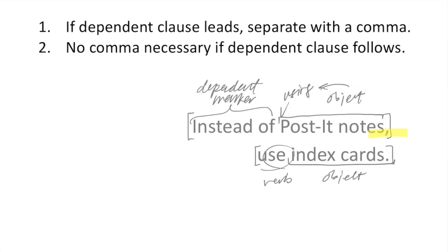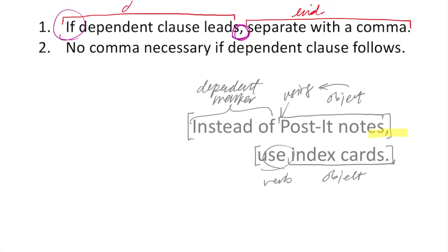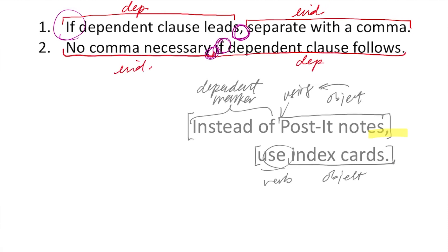This leads us to our first two guidelines. If a dependent clause leads in the sentence, you separate the two with a comma. You can see this in action: the dependent clause starts with if — the dependent marker word — followed by a comma, and then the independent clause. If you invert them and have the independent clause coming before the dependent clause, then you don't have to separate it with a comma. You can move straight into your dependent marker word.